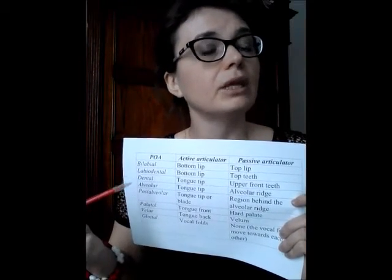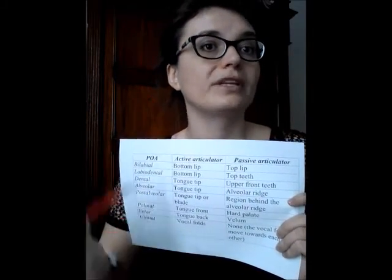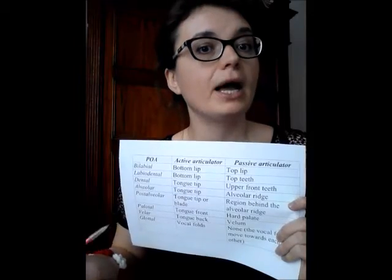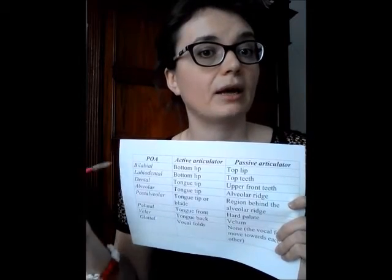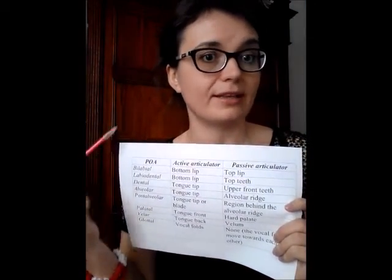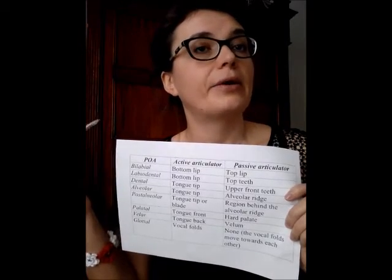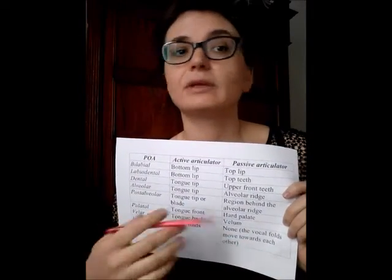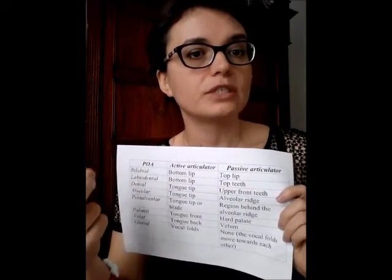Postalveolar: as we have different types of consonants here, depending on the consonant, either the tongue tip or the tongue blade moves towards the region just behind the alveolar ridge. Palatal: the tongue front moves towards the hard palate. Velar: the tongue back moves towards the velum. And finally, we have a glottal sound in English, where only the vocal folds are involved. As you can see, there is basically no passive articulator, as the vocal folds are moving towards each other.